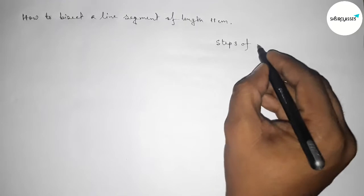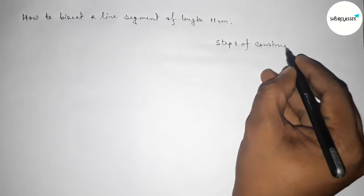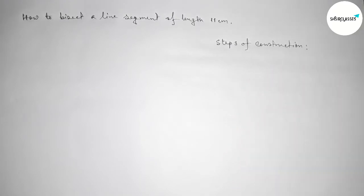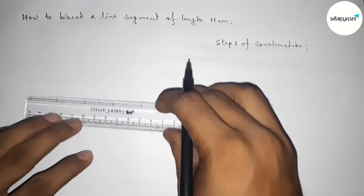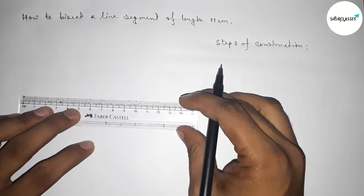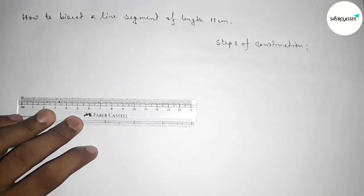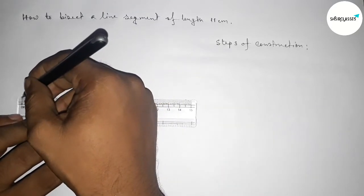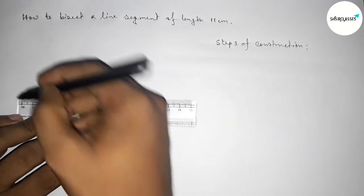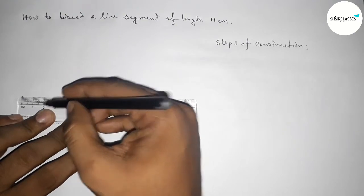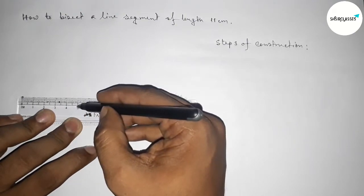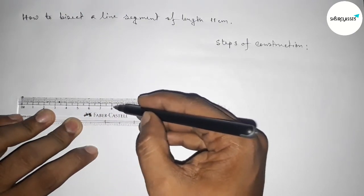Okay, so now first we have to draw here a line segment of length 11 centimeter by using scale. So this is starting zero, now counting - this is 1, 2, 3, 4, 5, 6, 7, 8, 9, 10, 11. So this is an 11 centimeter line segment.